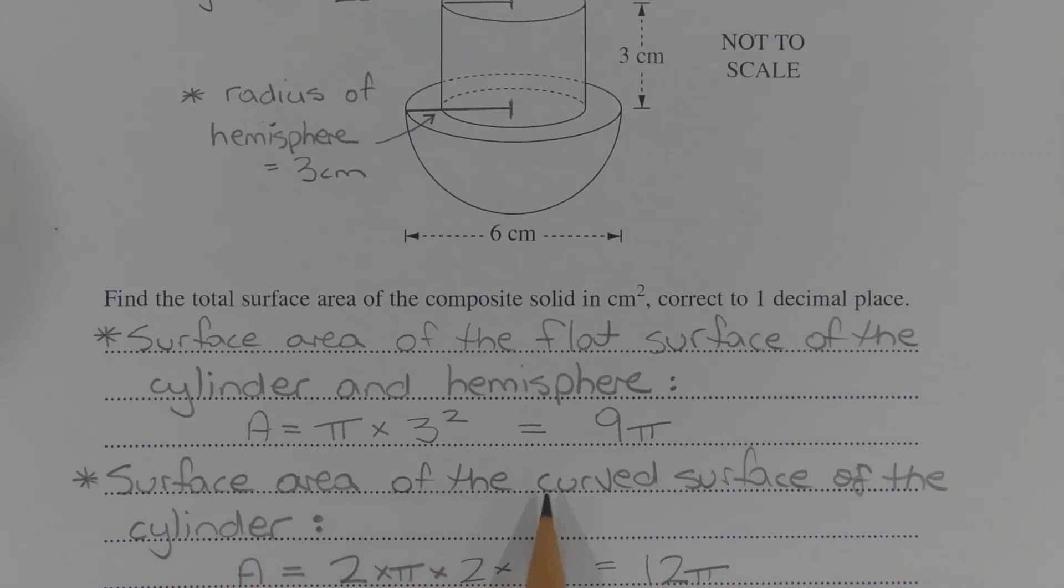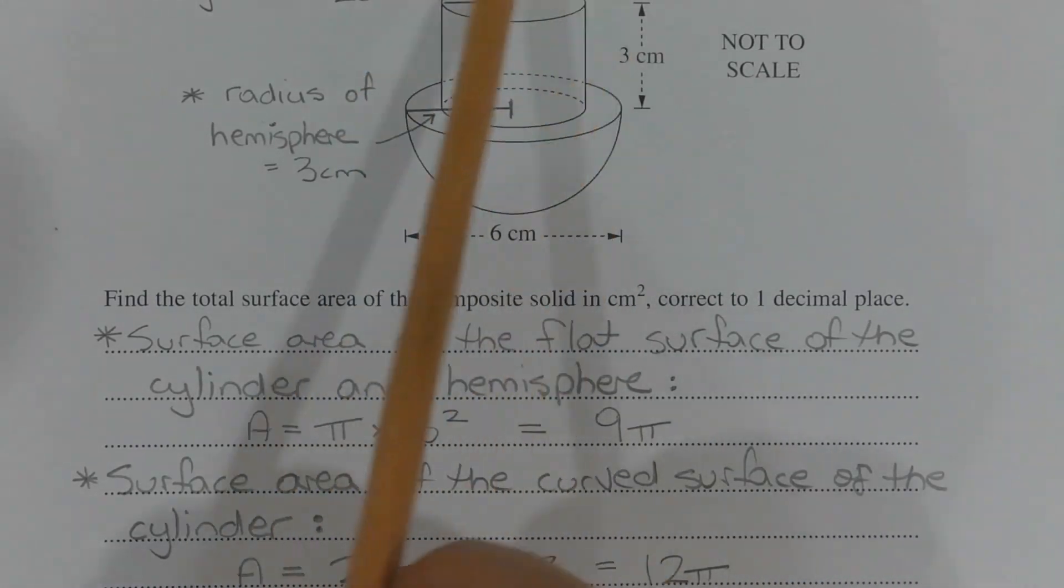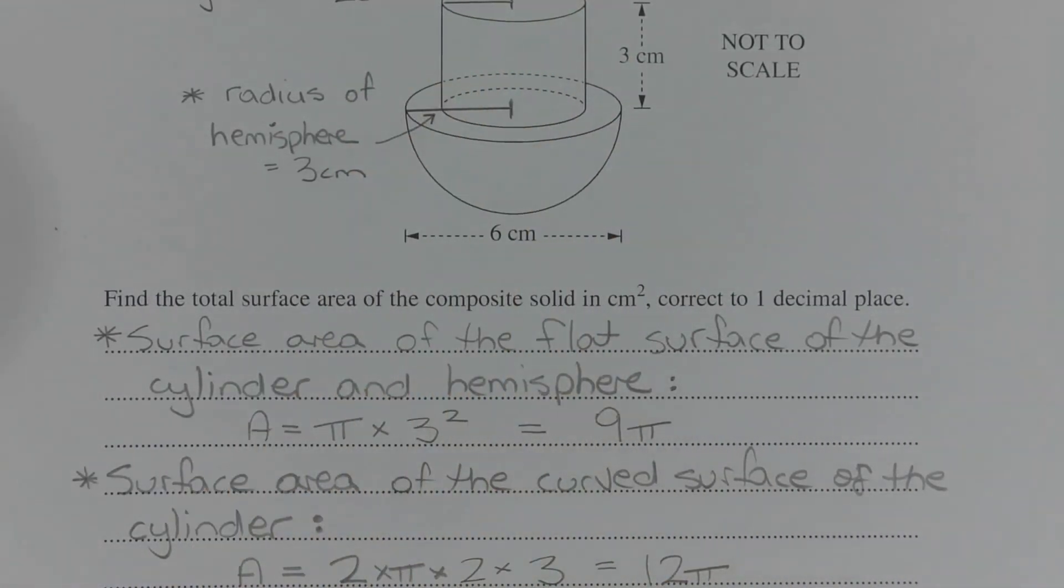Next, work out the surface area of the curved surface of the cylinder. That's this surface here—it's where a label would go if a label were to be attached. That's given by the formula 2πrh, so 2 times π times the radius of the cylinder, which is 2 cm, times the height of the cylinder, which is 3 cm, and that equals 12π.